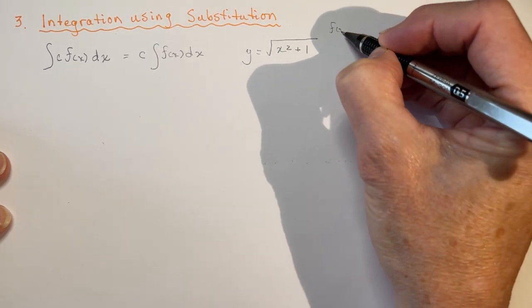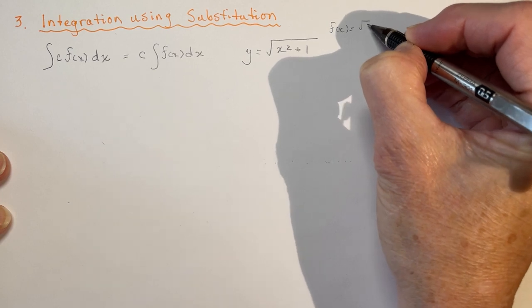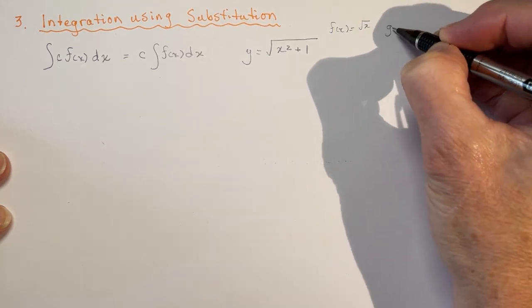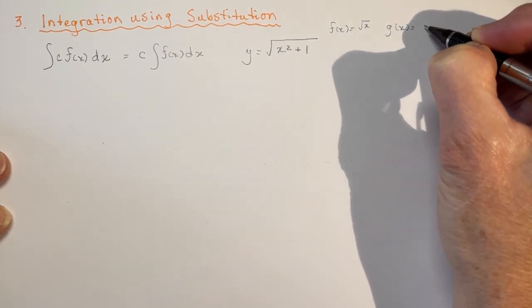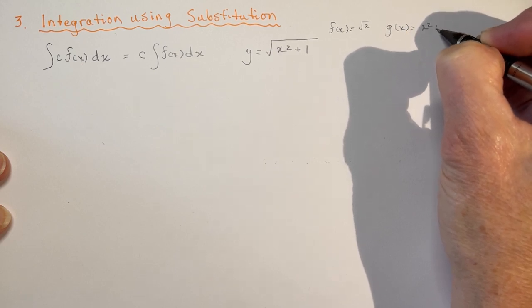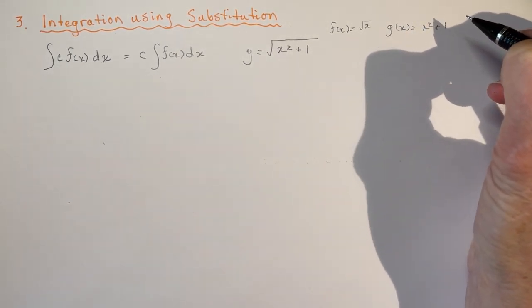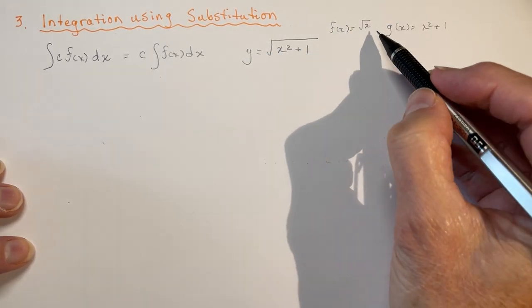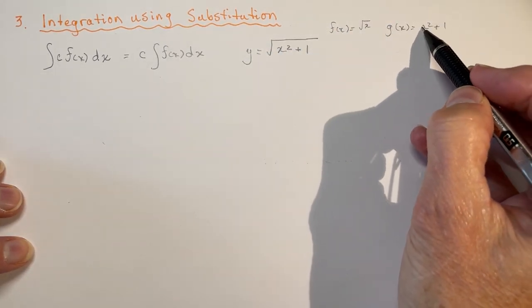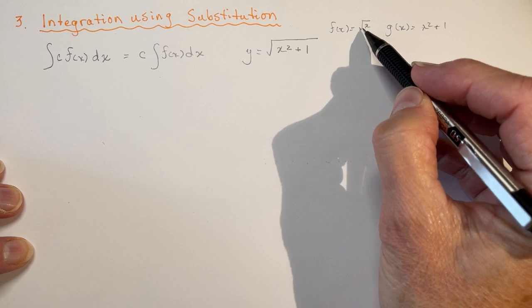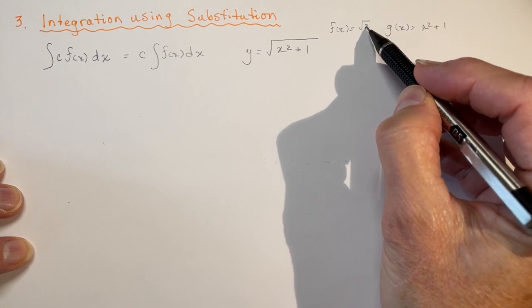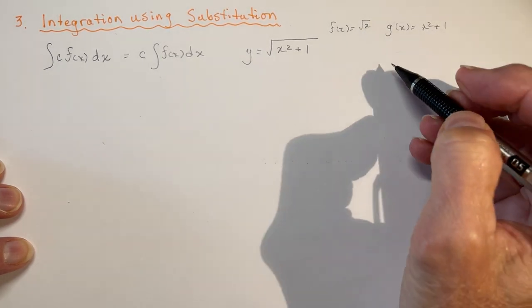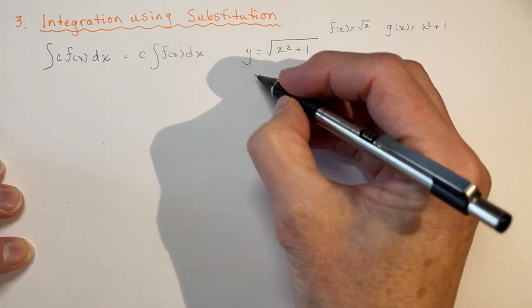So you could have said f of x is equal to the root of x. And g of x is equal to x squared plus 1. So that means that this composite function would be me substituting this g of x into the root of x and replacing x with this. So if I asked you to take the derivative of this,